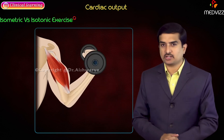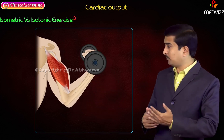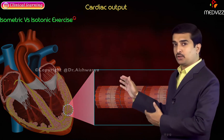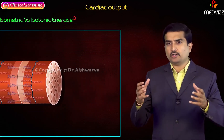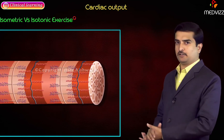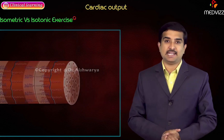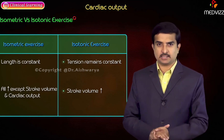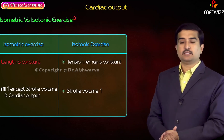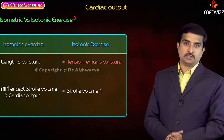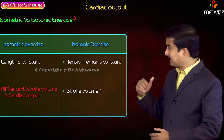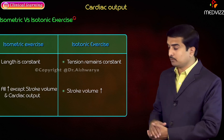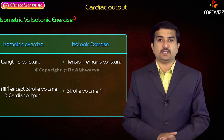In the heart, during iso-volumetric or isometric contraction, the myocardium contracts without change in the initial length of the muscle fiber and without change in ventricular volume. In simple terms, in isometric contraction, length remains constant, while in isotonic contraction, tension remains constant. In isometric contraction of the myocardium, all parameters increase except stroke volume and cardiac output. In isotonic contraction of the myocardium, stroke volume increases.